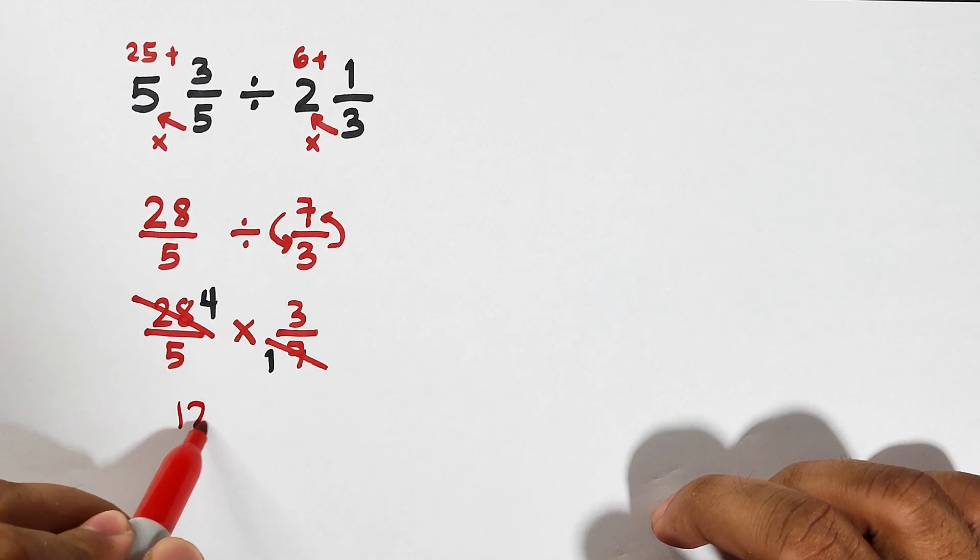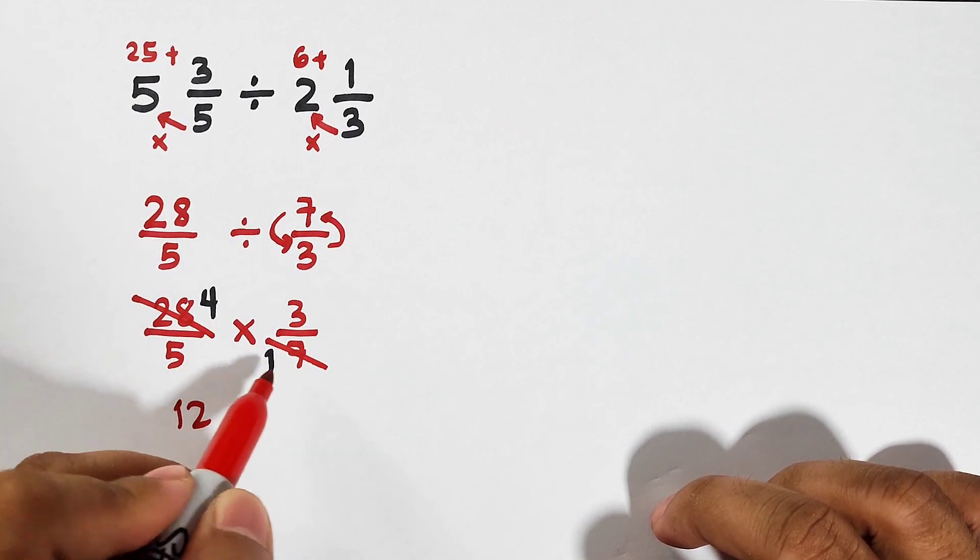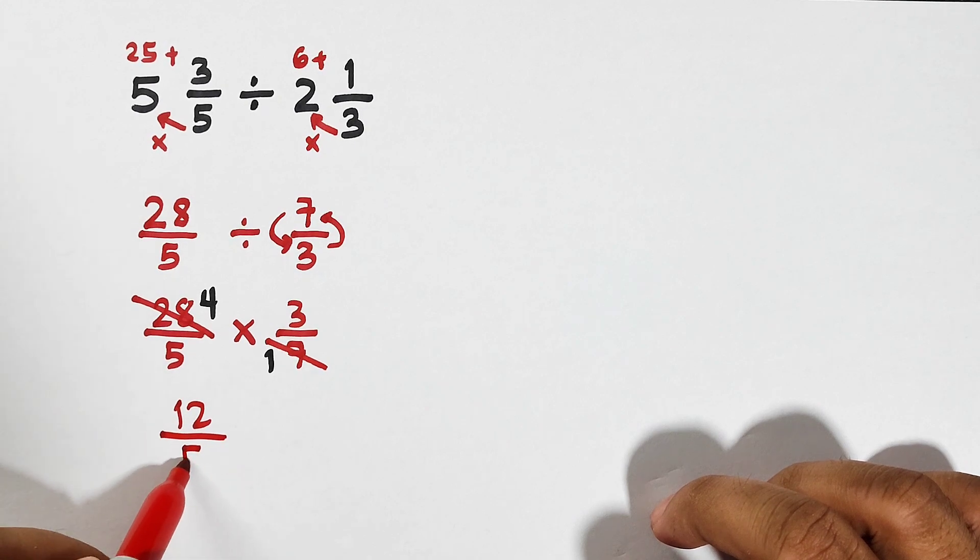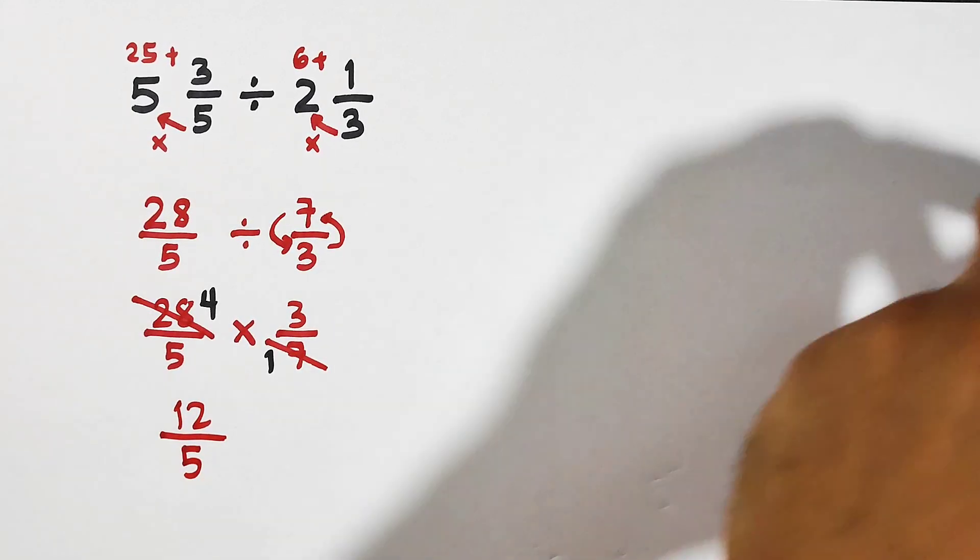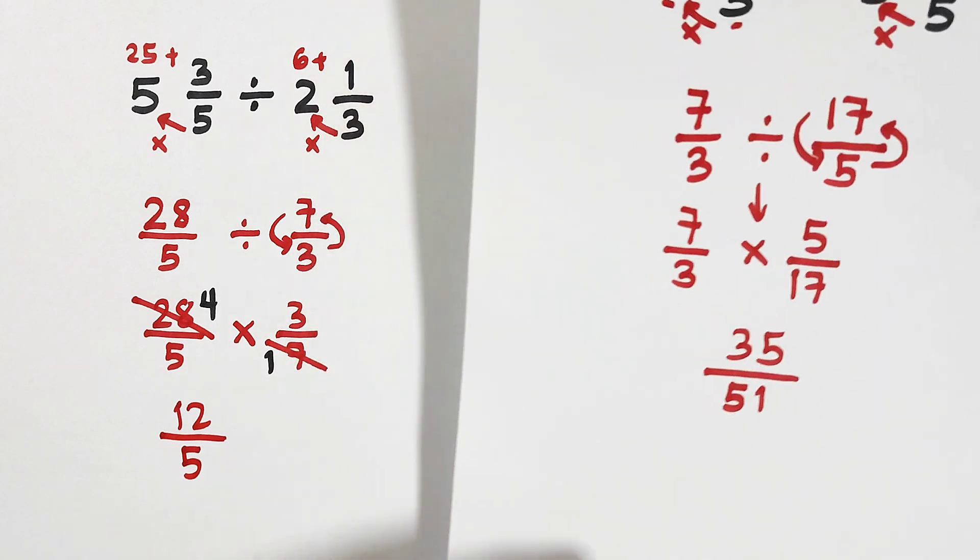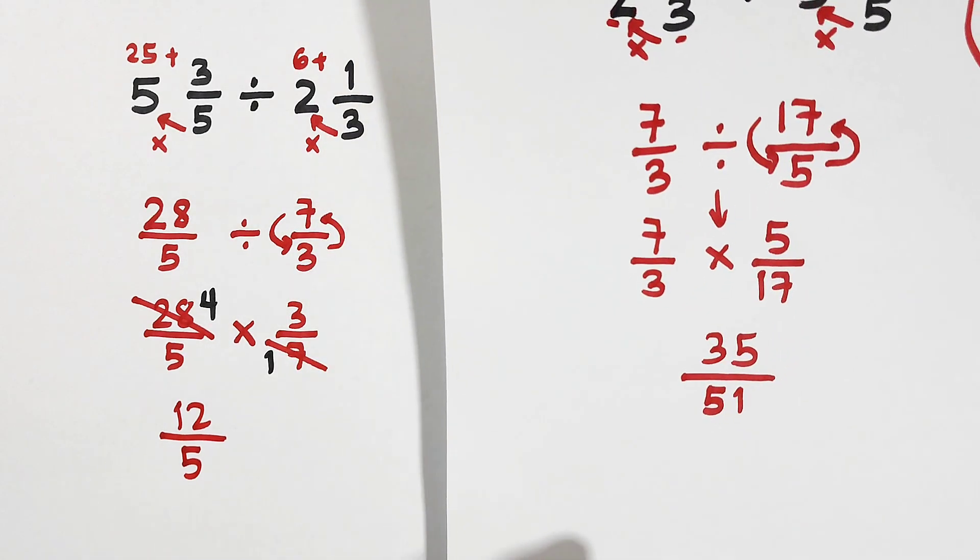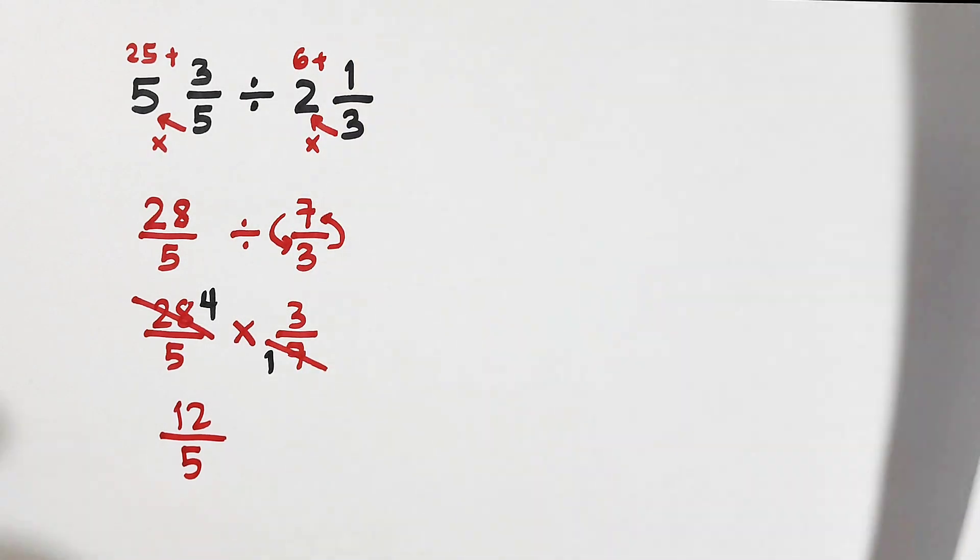So let's multiply. 4 times 3, that is equal to 12. 5 times 1, that is equal to 5. Now compared to our first problem, as you can see, the answer is 35 over 51. This one is a proper fraction. In our number 2 problem, the quotient is an improper fraction.